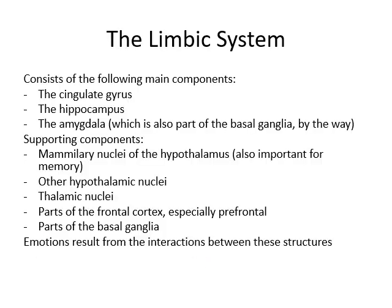The primary emotional centers of the brain are referred to as the limbic system, and the limbic system consists of three major components. Different textbooks and experts also include some other components, so the limbic system is a bit of a wishy-washy definition, but generally people agree that these three structures are definitely part of the limbic system.